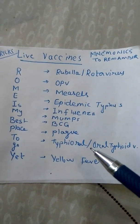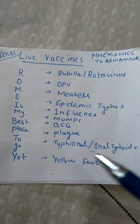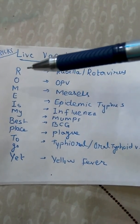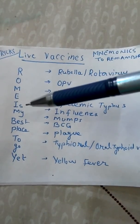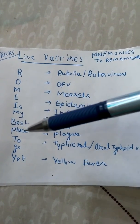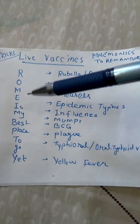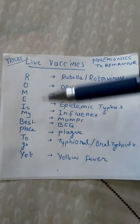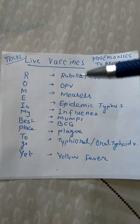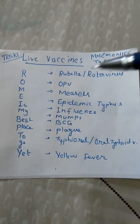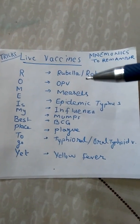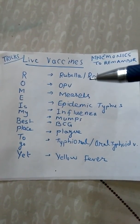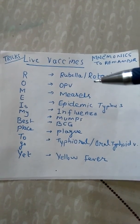Typhoral is also called the oral typhoid vaccine, and 'yet' means Yellow Fever. So again, the mnemonic is: 'Rome is my best place to go yet.' You can make a short sticky note and put it on your wall where you can frequently see it, and you'll remember it in one or two glances.